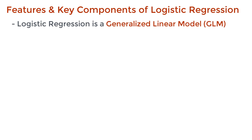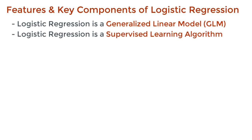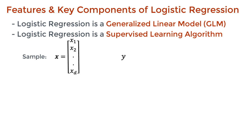Logistic regression is a type of generalized linear model used to model classification problems in machine learning. Before getting into the specifics, let's begin by introducing some key variables. Logistic regression is a supervised learning algorithm — we require some features x and corresponding labels y. Let's say we have multiple features to represent a sample, in which case x is no longer a scalar quantity; it's represented as a vector of some d dimensions.